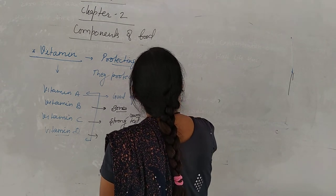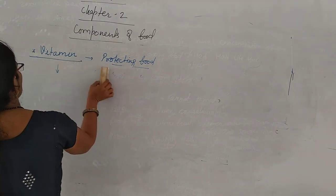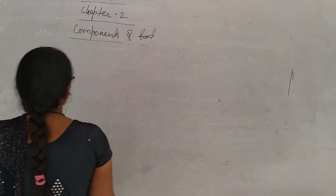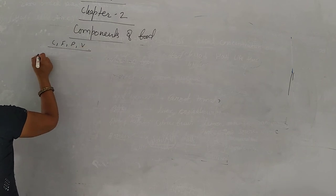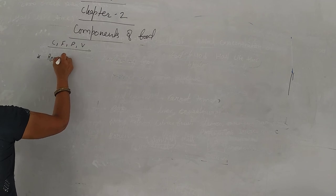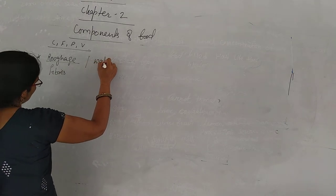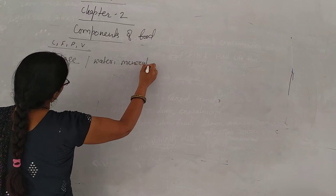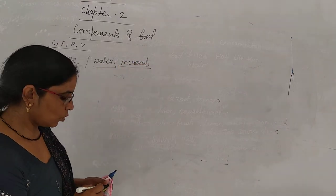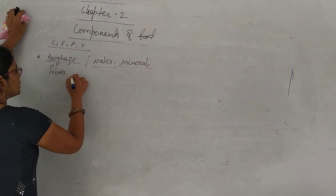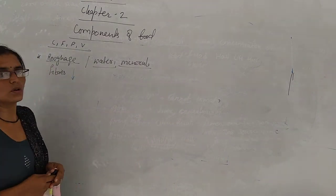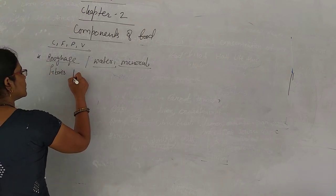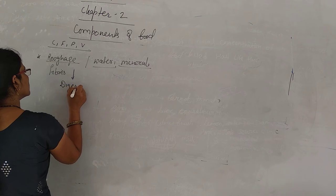Now we discuss about fibers. This is another food component. We discuss the first one is roughage. So what is roughage? The main function of roughage is the important role in digestion of the food. Understand?